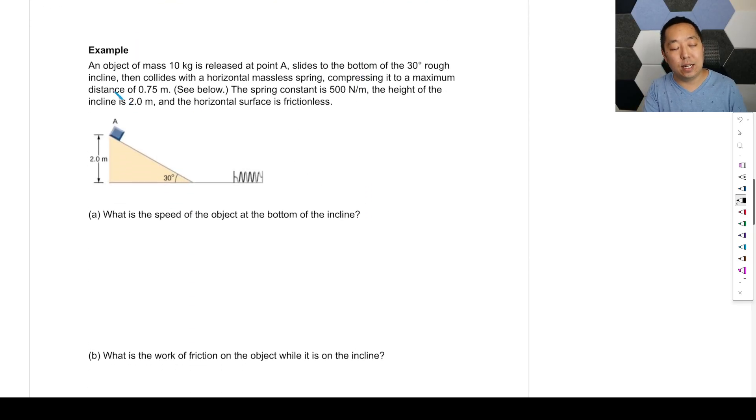Okay, so let's take a look at an example here. We have an object of mass 10 kilograms is released, so its initial velocity here is zero. Slides down to the bottom, a 30 degree rough incline, so there's friction here. Then collides with a horizontal massless spring, compressing it to a maximum distance 0.75 meters. The spring constant is 500 newtons per meter. The height of the incline is 2 meters. And the horizontal surface is frictionless. There's no friction here, and there's some friction here.